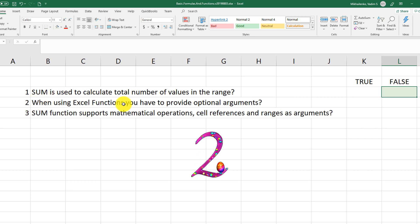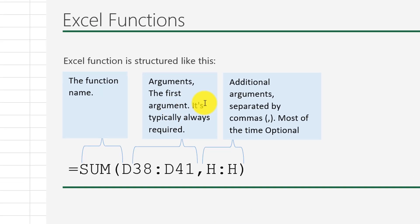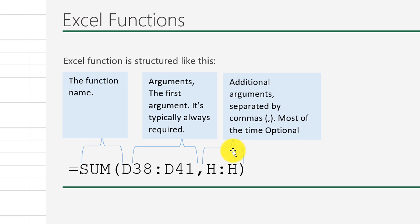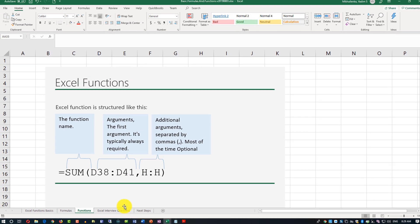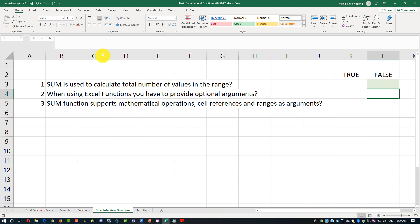Question two: when using Excel functions, you have to provide optional arguments. The answer is False. Functions have two types of arguments: mandatory arguments, which must be supplied, and optional arguments, which you do not have to supply. So the answer is False.